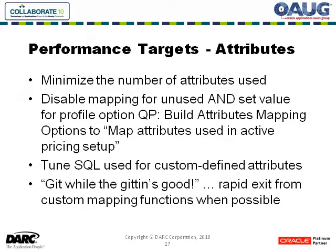Remember that every attribute is evaluated for every line, whether the attribute is used or not. You want to make sure that any custom queries you put in there are tuned properly. One recommendation if you have custom functions that map these attributes is to apply some logic right at the start: if this attribute doesn't need to be evaluated for these conditions, get out — get while the getting is good.